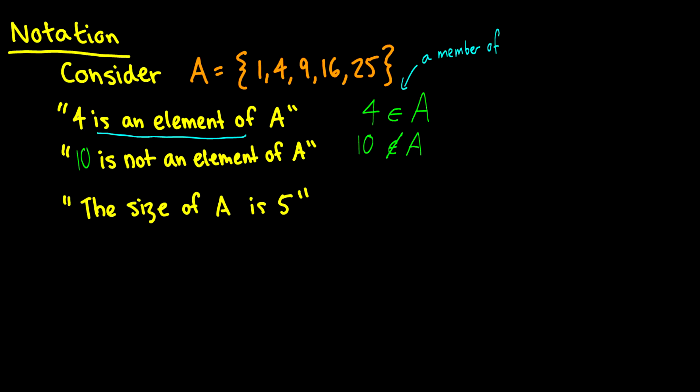And if we want to say the size of A is something, then we put the absolute value sign around the set. Now this isn't really an absolute value. It's called the cardinality symbol.